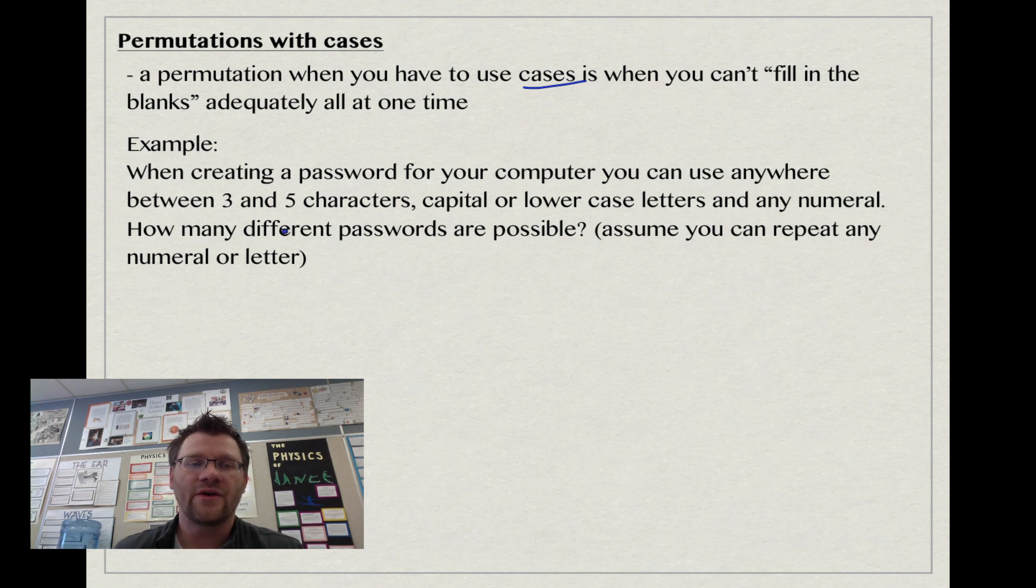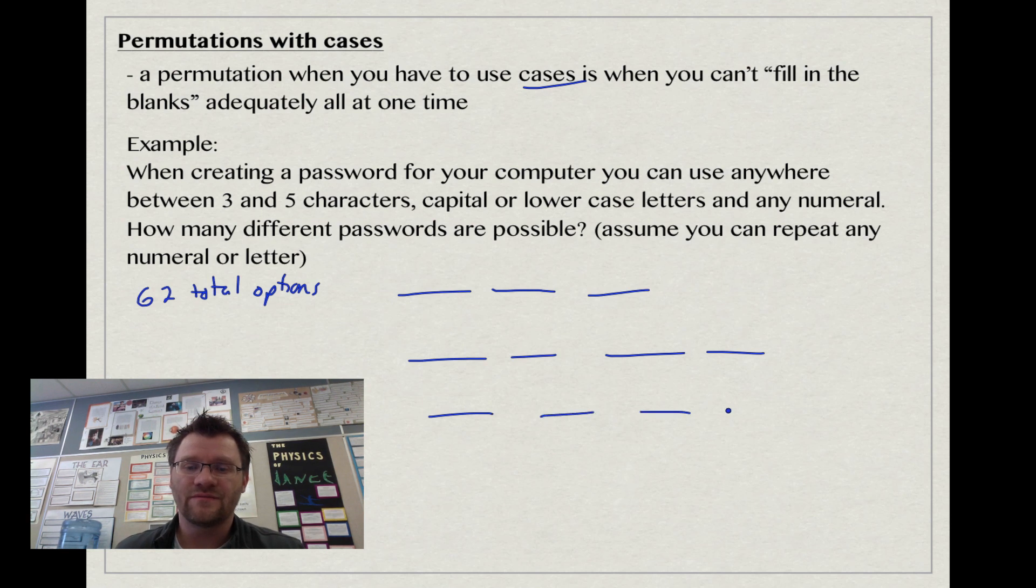If we can repeat any number or letter, we need to know how many total options we have. That would be 26 capital letters, 26 lowercase letters, so that's 52, and any numeral from 0 to 9, so that's another 10. We have 62 total options. The reason this is an example of cases is that in one case we can have three different characters in our password, in the next case four, and in the next case five.